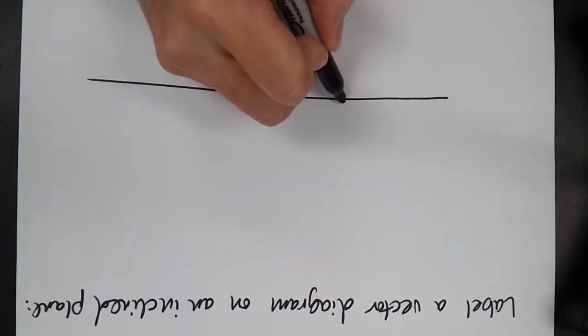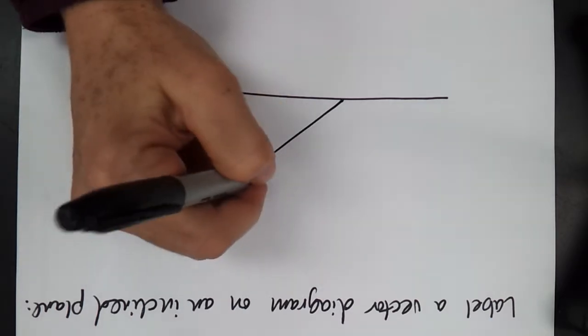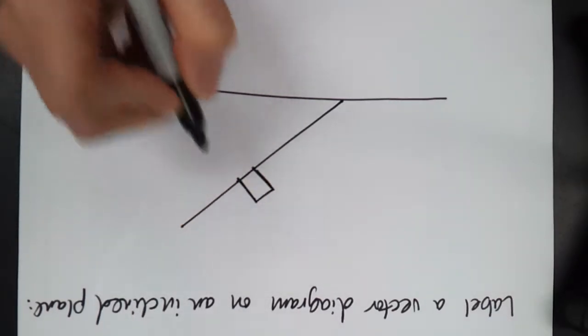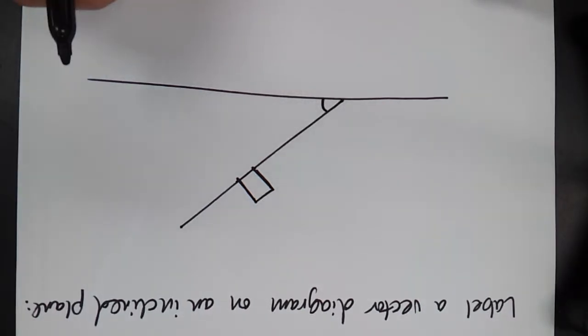So I'm going to create my surface. There's my incline plane. I have an object that is there. This is going to be some angle, and I'll either give it to you or you have to solve for it.